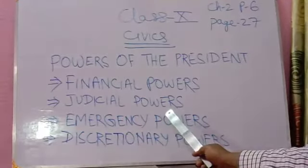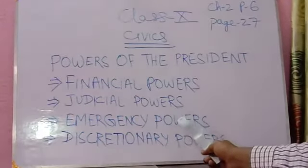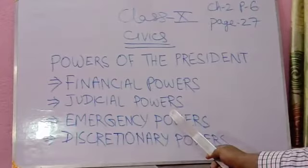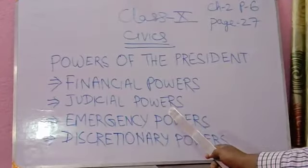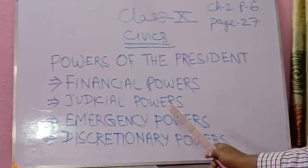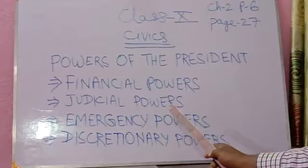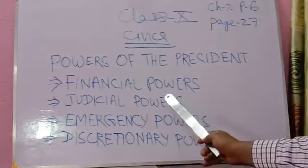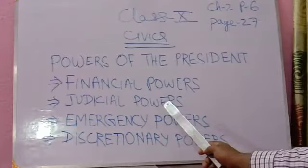The president constitutes a Finance Commission after every five years. The chairman and four members are appointed by the president. The Finance Commission makes recommendations to the president on specific financial matters. This is the Finance Commission which is constituted by the President of India.